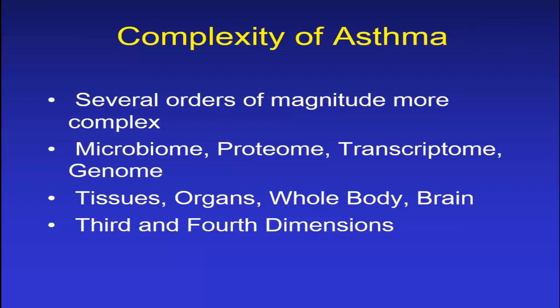Asthma is a very complex pathogenic entity with several orders of magnitude beyond these cartoons. These cartoons occur in two dimensions; actual asthmatic responses among cells and tissues occur in three dimensions, involving ligands binding to receptors in living tissues. The microbiome, proteome, transcriptome, and genome all contribute through the omics revolution. Tissues, organs, the whole body, and even the brain can affect lung function. This process occurs not just in three dimensions, but in four — complexity changes over time.